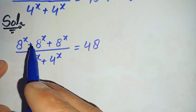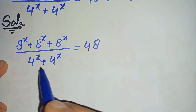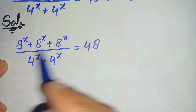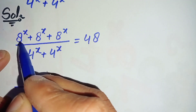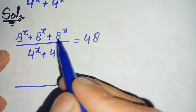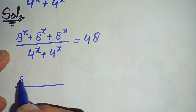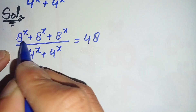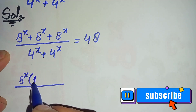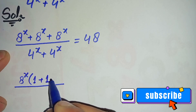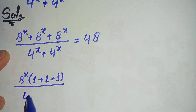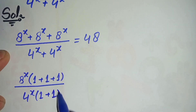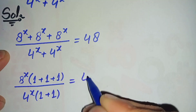Looking at the left hand side, there is the same number added three times in the numerator, and the same number added two times in the denominator. So we can rewrite the left hand side by taking 8^x as a common factor from all terms in the numerator, and 4^x as common factor from the denominator, leaving 1 plus 1 plus 1 and 1 plus 1 respectively.